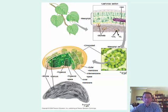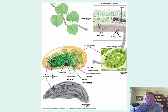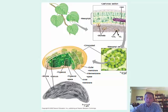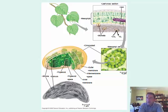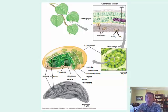Inside the double membrane are units that collect solar energy and are the site for chemical reactions of photosynthesis. These structures inside are called thylakoids, and a stack of thylakoids is called a granum. An analogy often given is that thylakoids are like coins — if you stack coins together, that whole stack is the granum. Or like a stack of pancakes: one pancake is a thylakoid, the whole stack is the granum.